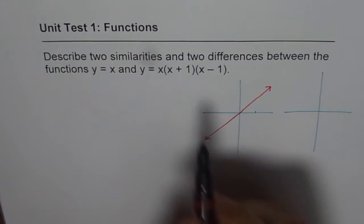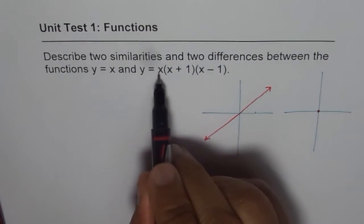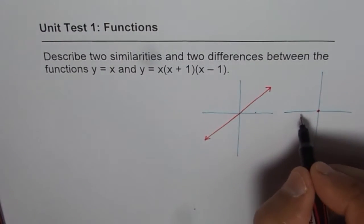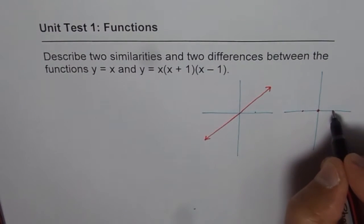The second one is a cubic function which has three zeros. Zero at zero because of x, x plus 1 will give us zero at minus 1, and x minus 1 will give us zero at plus 1.